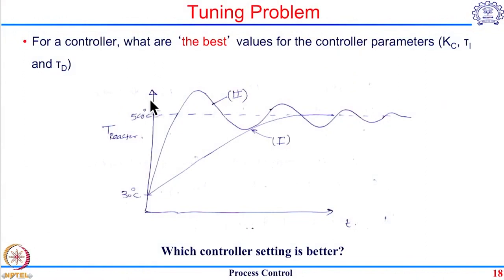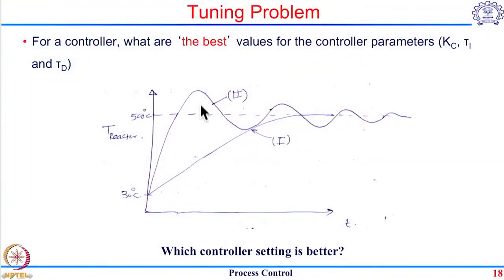Now let me give a different scenario for the same example. Let us say that if the temperature crosses 510 degrees it is detrimental for the system — either the catalyst gets degraded, or there is a reaction selectivity problem where some undesired product gets selectively produced at 510 degrees, causing the yield for the desired product to go down. In that case, I would always want to ensure the temperature inside the reactor never overshoots that value. So controller 1 turns out to be the better option.